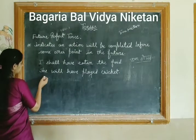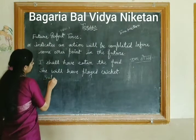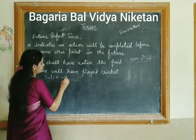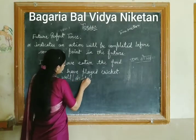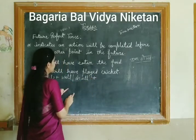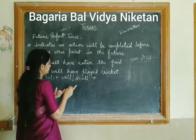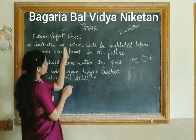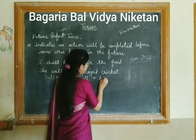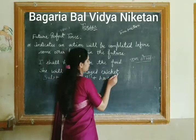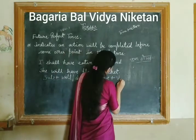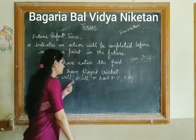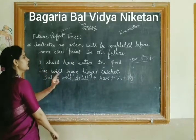The structure is very simple. It is: Subject + will/shall (helping verb for future) + have + verb third form + object. Every perfect tense — whether present, past, or future — uses the third form of the verb. This completes the assertive or positive sentence structure.